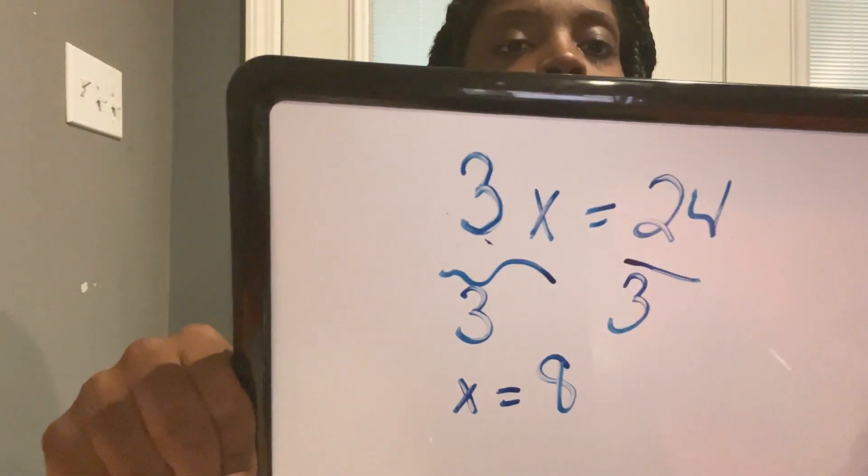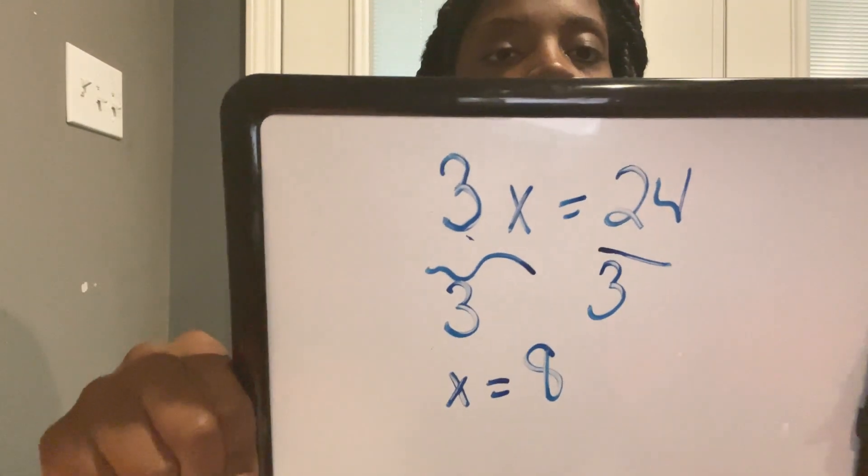Let me write it a little neater so you can see. The equation is 3x equals 24. We're going to get the x by itself by dividing by 3. It cancels each other out, so what you do to one side you have to do to the other side — divide the 24 by 3. Once you do that, x equals 8. Remember: get your x by itself.